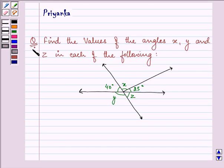Hello and how are you all today? The question says find the values of the angles x, y, and z in each of the following. We are dealing with the second part here.